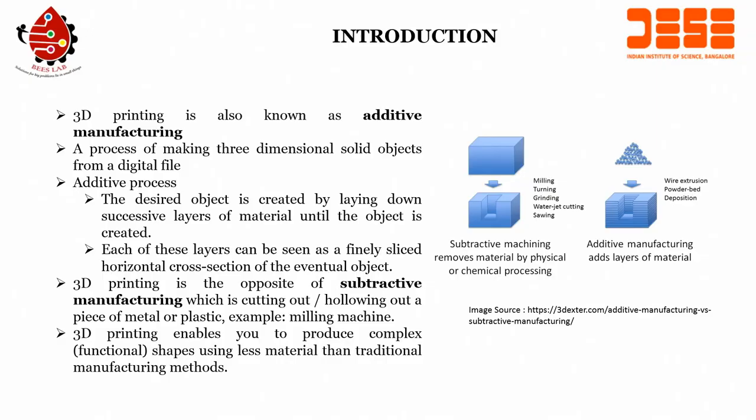We can design a casing for the electronic signal conditioning circuit for EEG, and you can also design and fabricate electrodes for capturing EEG signals. Those electrodes would be metal electrodes, and if you want to print metal, you require 3D metal printing. So, let us see what exactly 3D printing is. The 3D printing is also known as additive manufacturing process.